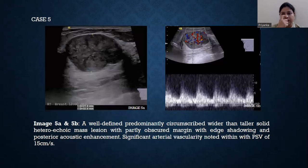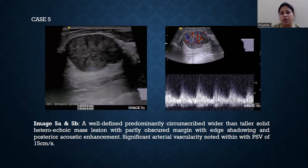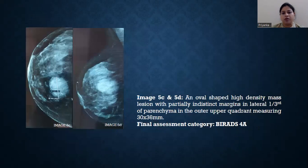Case number 5: a well-defined, predominantly circumscribed, wider than taller, solid, hypoechoic mass lesion with partly obscured margin, edge shadowing, and posterior acoustic enhancement. Significant vascularity on limited color Doppler.